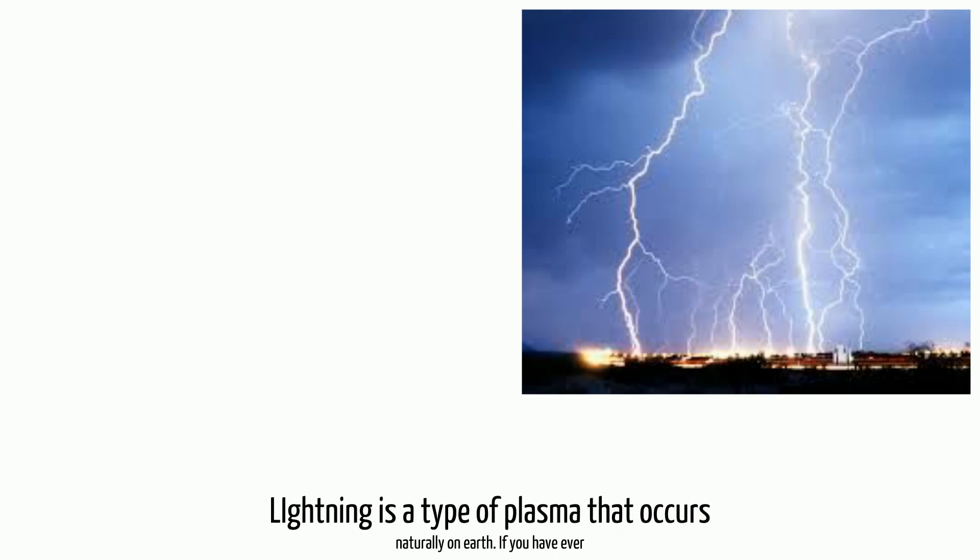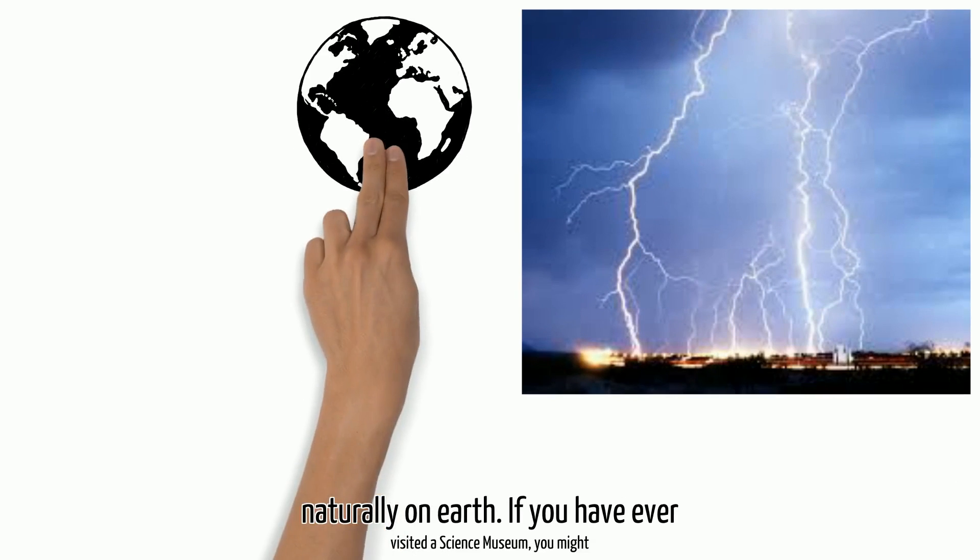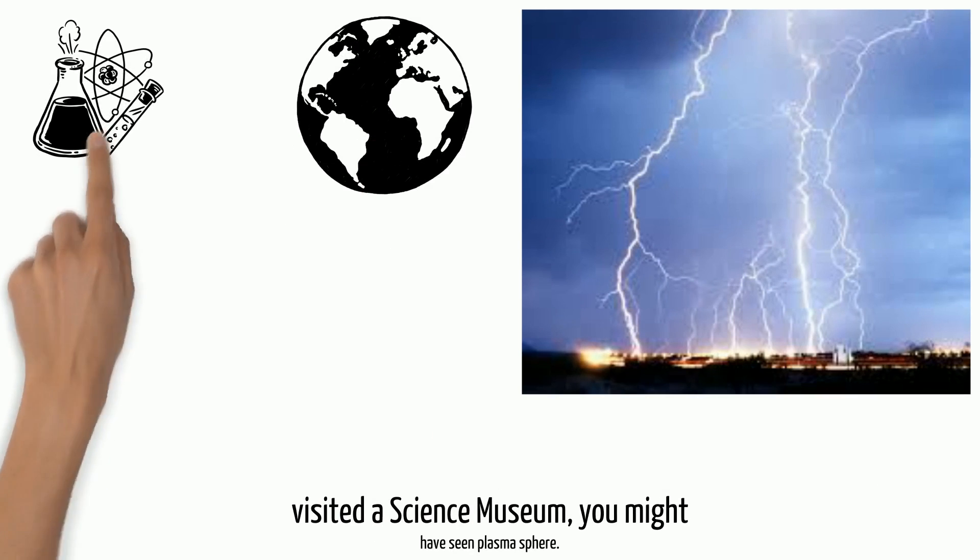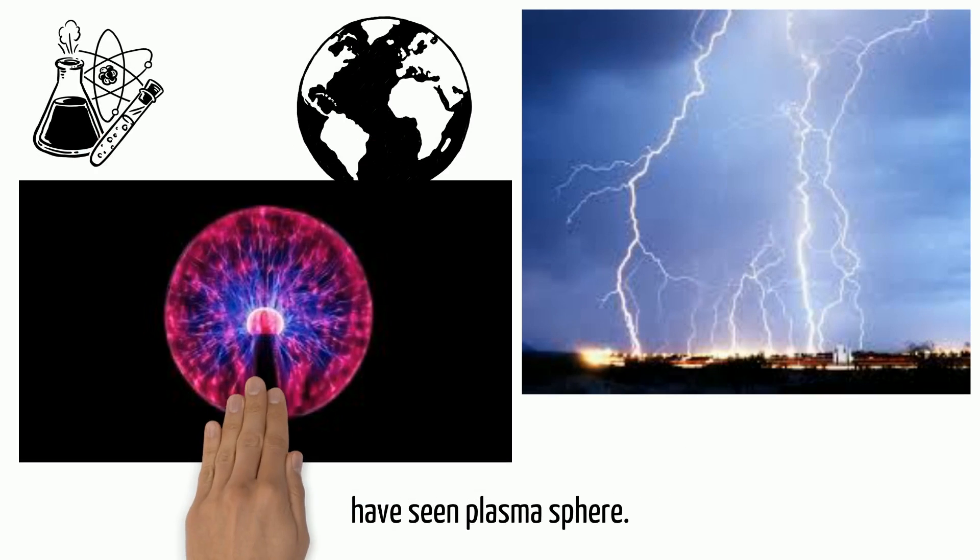Lightning is a type of plasma that occurs naturally on Earth. If you have ever visited a science museum, you might have seen a plasma sphere.